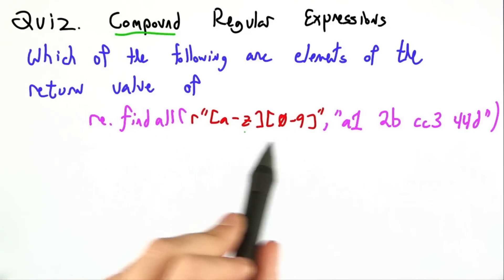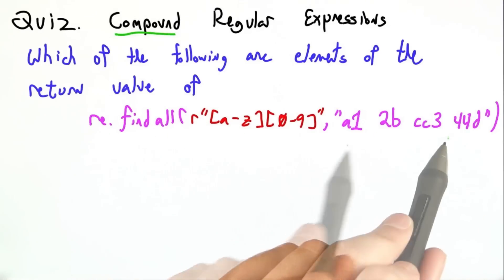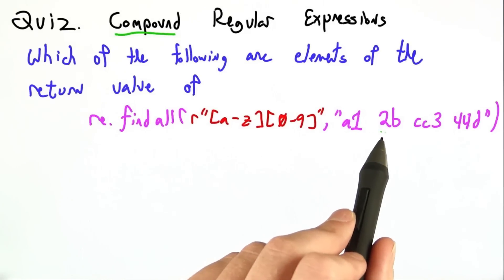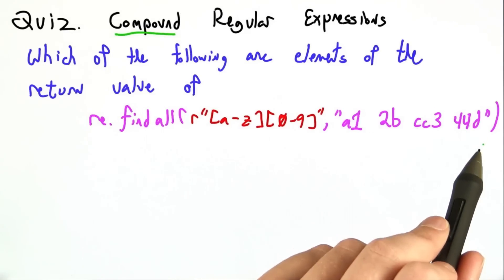We're looking for a through z followed by 0 through 9 in this artificially constructed string designed to be a bit tricky: a1 space, 2b space, cc3 space, 4, 4d.